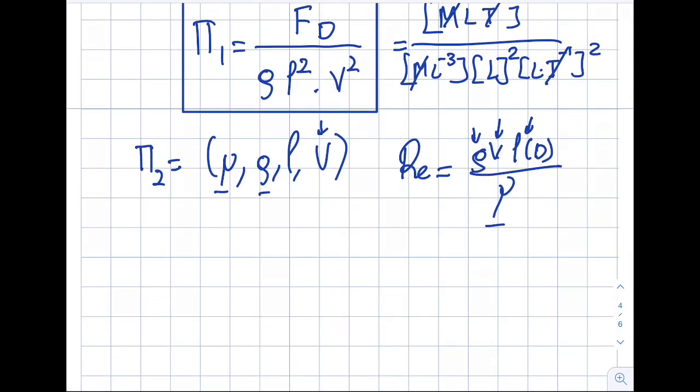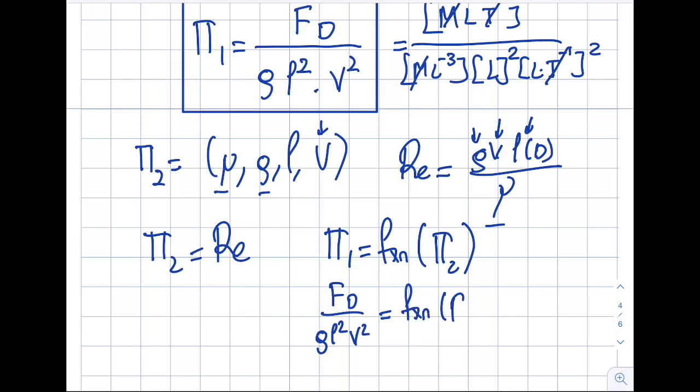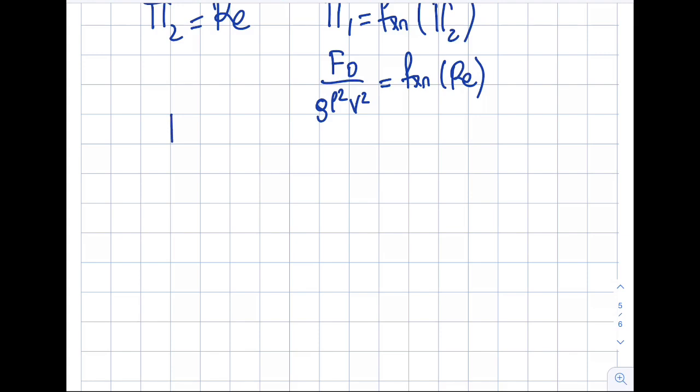All right. So then, let me write it over here. My pi 2 will be equal to Reynolds number. Now, at the end, my pi 1 will be a function of, the way that we approach this, is going to be a function of pi 2. So then, FD divided by rho, L squared, V squared, will be a function of the Reynolds number. Let me show you the advantage of going through this process. So let's say that we have an axis over here. In the x-axis, I'm going to call this pi 2, which is the Reynolds number. And over here, I'm going to do this FD divided by rho, L squared, V squared. So then, if I want to do an experiment to obtain this, I will just get one particular curve. I'm obviously arbitrarily drawing a curve over here. Let's say it will end up like this. I'm going to obtain my experimental points. I'm going to do a best curve fit. And I will obtain this curve.